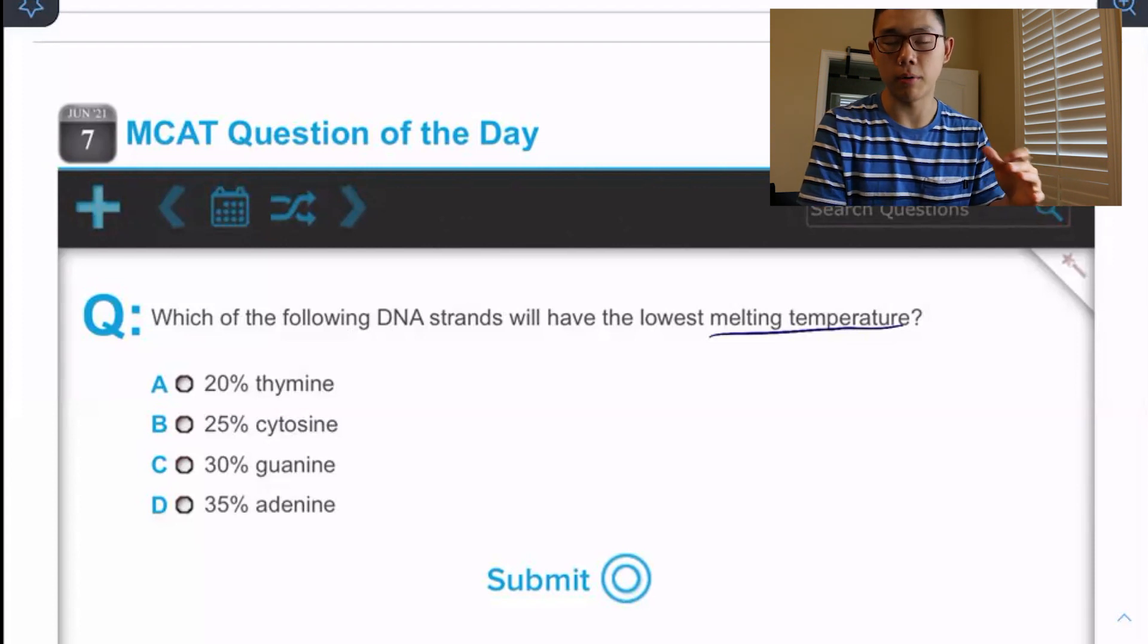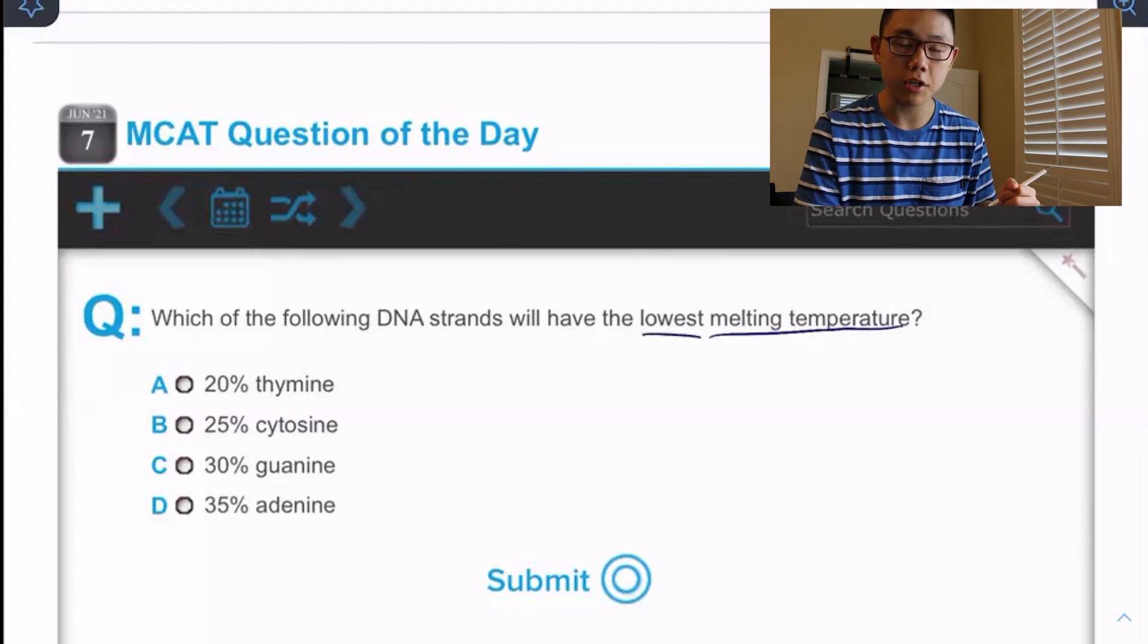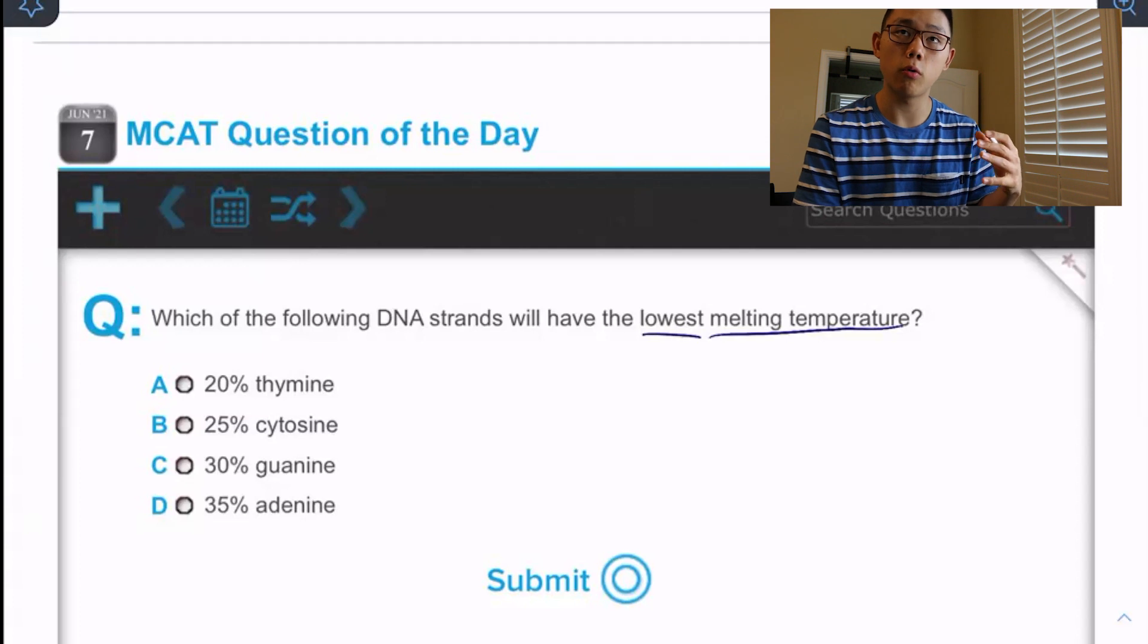So the less heat that I need to put in to ruin it, the less stable it probably was to start with. And so if this question is asking which of the strands has the lowest melting temperature, it's asking which one of these requires the least amount of heat to be denatured. And so I'm looking for the most unstable.